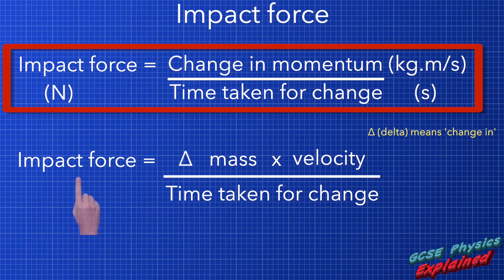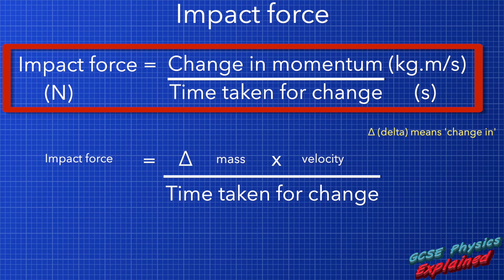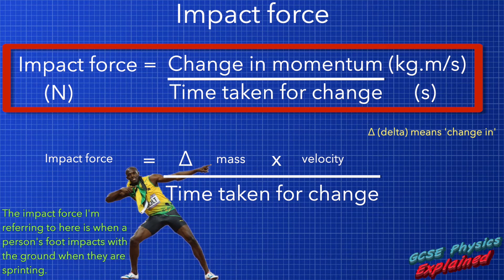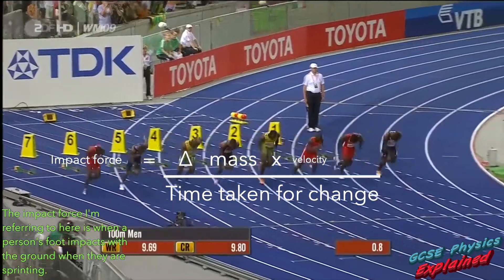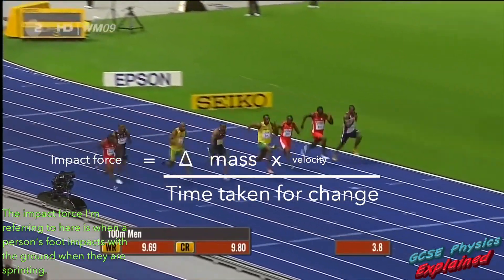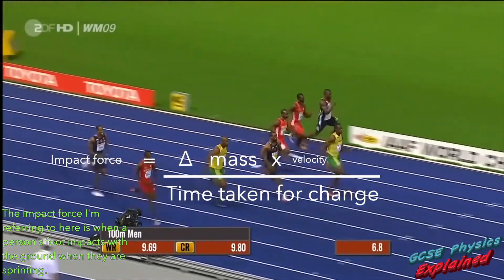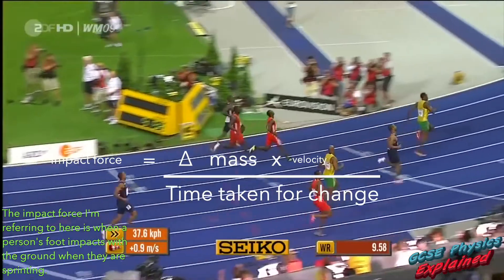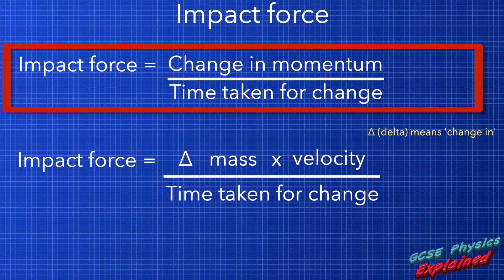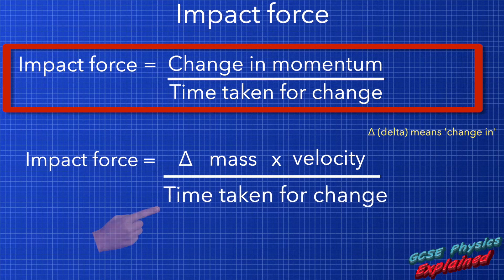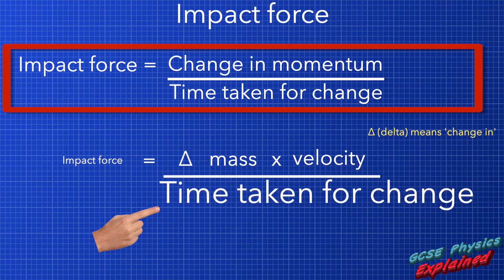So, to minimise the impact force, we could make the mass and velocity of the object as small as we can — but that's not always possible. What if the object is a human? The mass of a human is what it is; you can't change it. You could get the human to decrease their velocity, but what if they're in a race and need to travel fast to win? Usually the best way to reduce impact force is to make the time taken for the change in momentum happen over as large a period as possible.